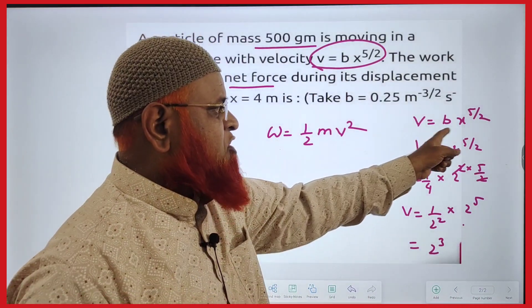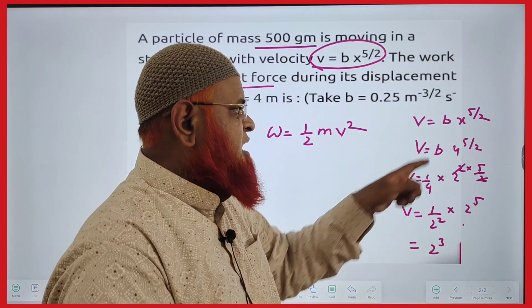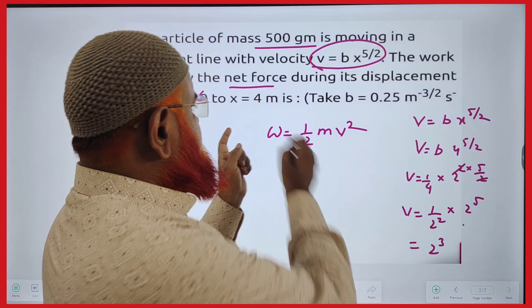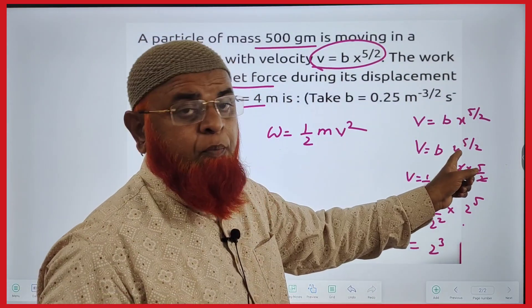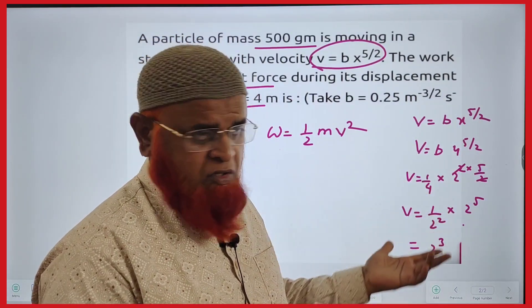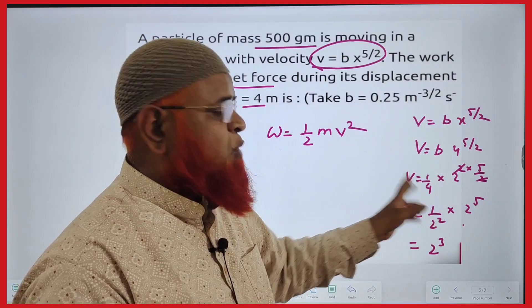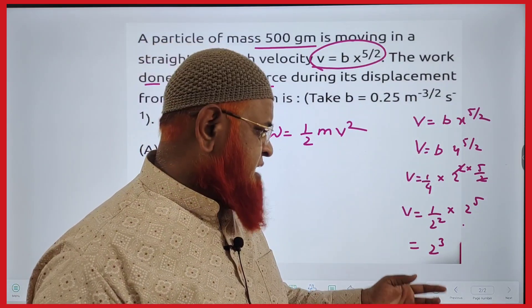Now, here I have taken a value of V first of all. I have found the V here. B x power of 5 by 2. X is equal to, he has given it as 4 here now. So I have taken 4 power of 5 by 2. 4 is nothing but 2 square. And B value is 0.25. I have taken as 1 by 4, so that calculation gets easier.